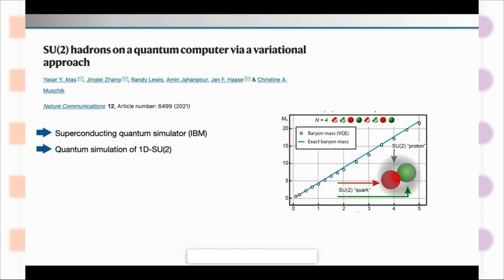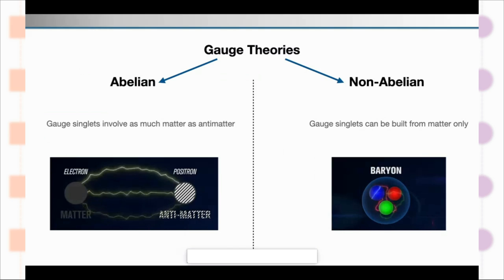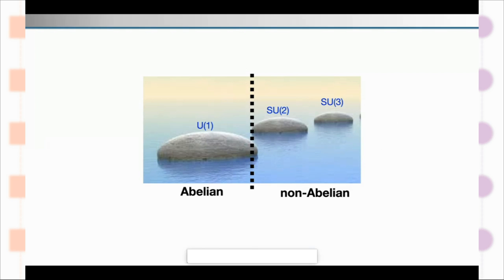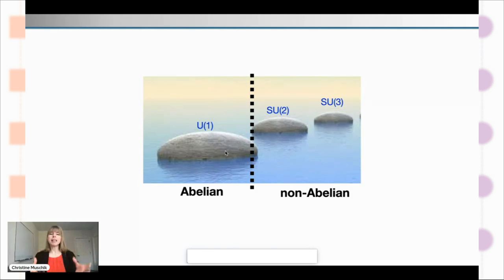So my group and I embarked on the quest to simulate a non-abelian gauge theory and to really show how we can simulate gauge singlets from matter only. In 2021 we learned how to simulate two colors — nature's quantum chromodynamics has three colors, but we took it step by step. We simulated a baryon on a superconducting quantum simulator on IBM with two colors — a non-abelian gauge theory. The first stepping stone was abelian gauge theory with no color; the next stepping stone was non-abelian gauge theory with two colors.